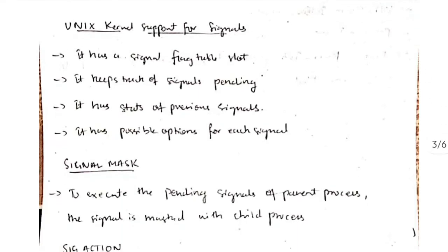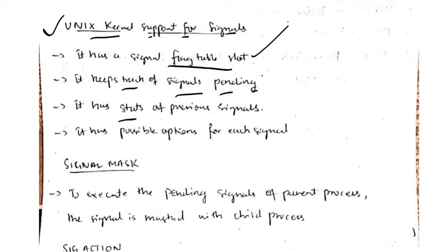What is the UNIX kernel support for signals? The kernel has a flag table slot for keeping track of the process. It tracks pending signals, has stats of previous signals, the possible options for each signal, and much more.